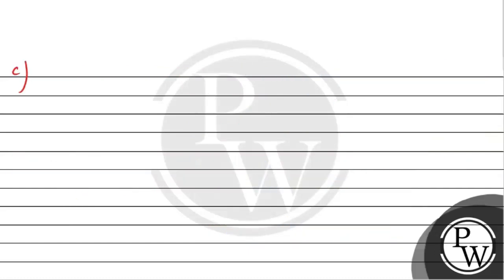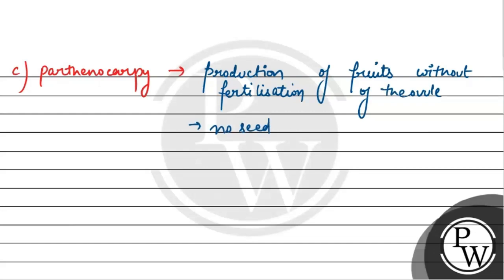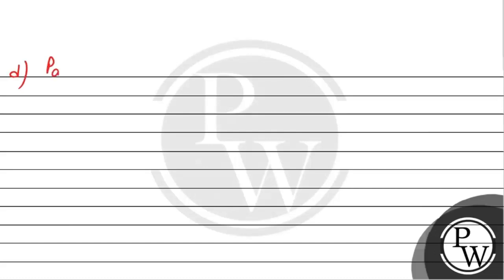Next option dekhte hain jo hai Parthenocarpy. Parthenocarpy mein kya hota hai — production of fruit without fertilization of ovules. That means jo ovules hote hain woh fertilized nahi hote. Agar ovules fertilized nahi honge, that means seeds bhi produced nahi honge — no seeds formed. Parthenocarpy mein fruit toh bante hain lekin seeds nahi bante. Yeh parthenocarpy banana mein hoti hai and figs mein hoti hai. Parthenocarpy occurs only in plants.